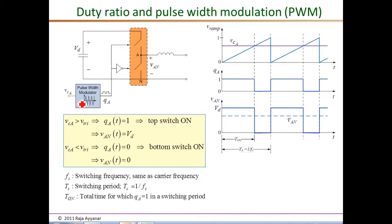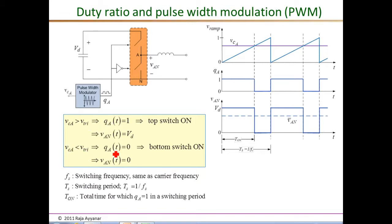All switching converters have a closed-loop feedback controller that generates a control signal V_C based on current operating conditions and control objectives. This control signal is compared inside the pulse width modulator with an internally generated ramp signal V_ramp. The convention is that whenever V_C is higher than V_triangle, Q is one; when V_C is less than V_ramp, Q is zero.